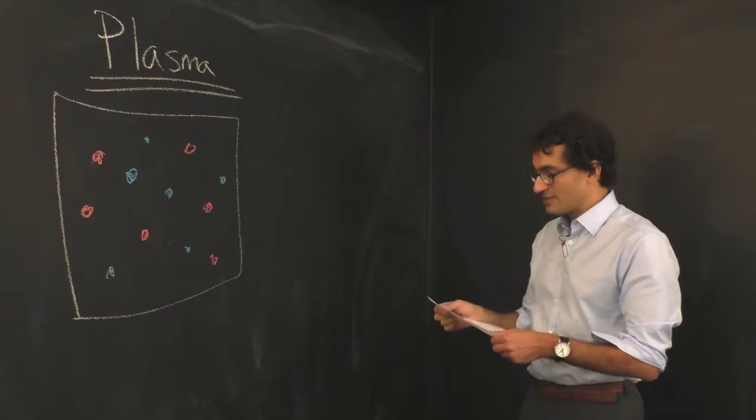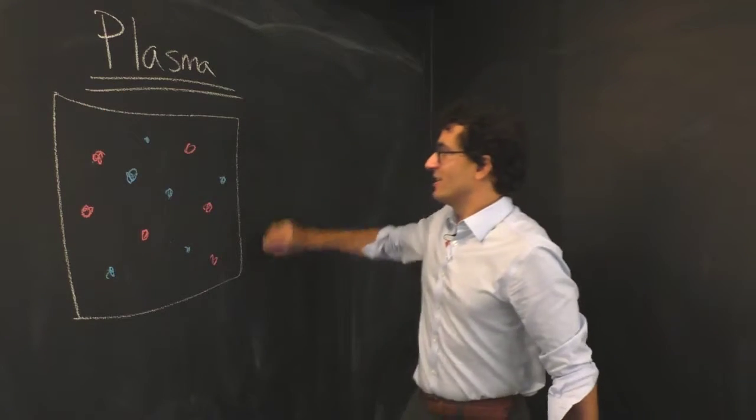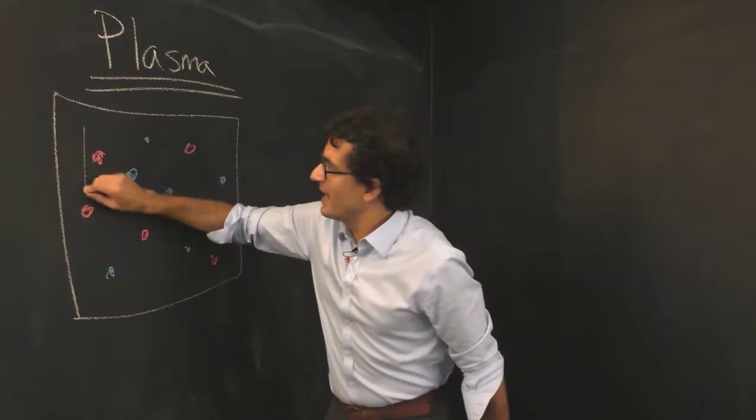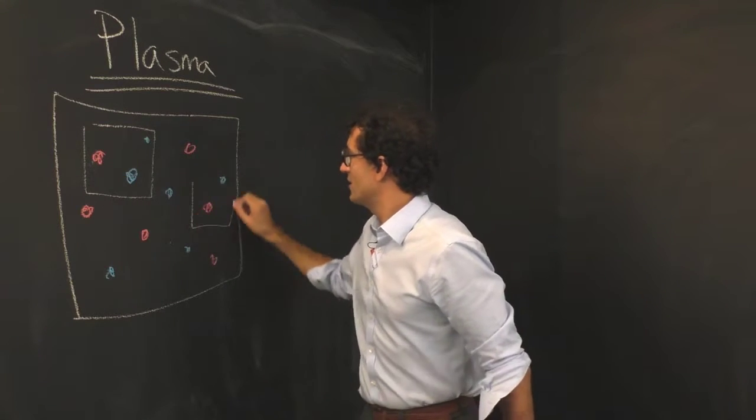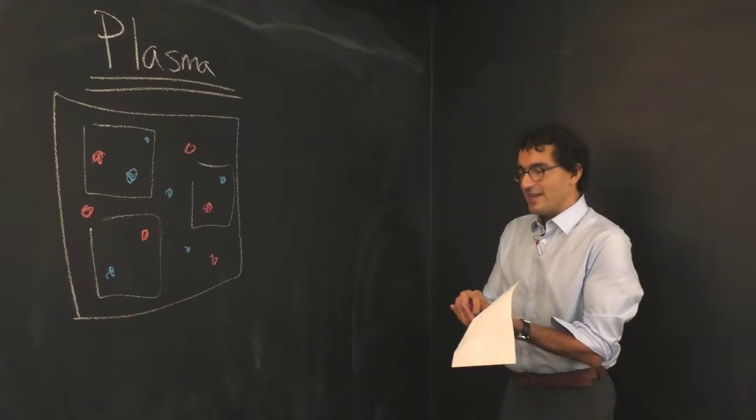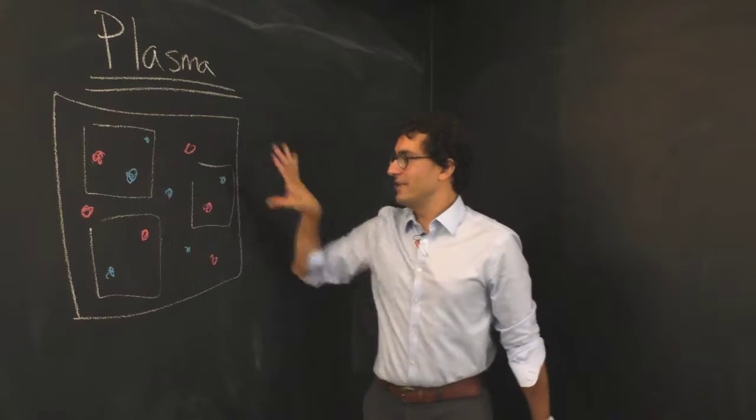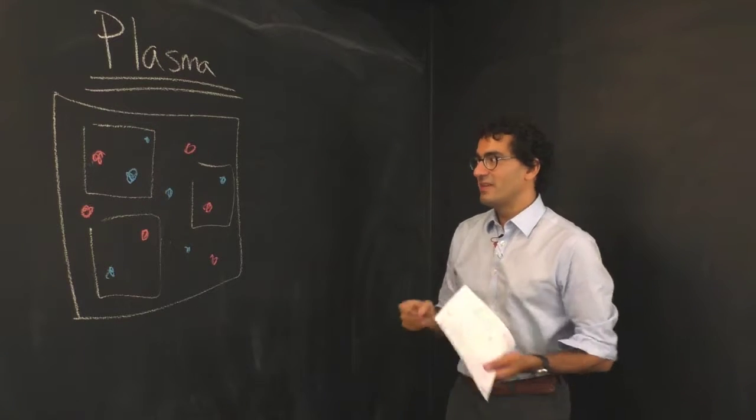So if this gas were sufficiently mixed, then basically in any small unit that you took there would be an equal number of positive and negatively charged particles. The gas as a whole would be neutral, but also if we just took a little clump, an interior clump, it would also be neutral.